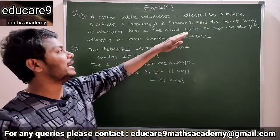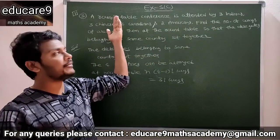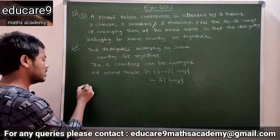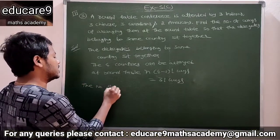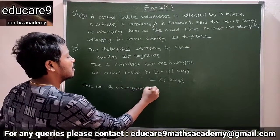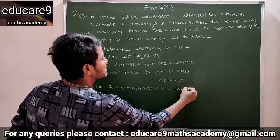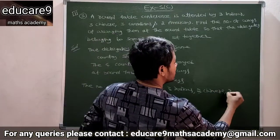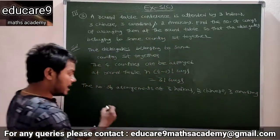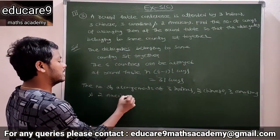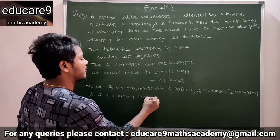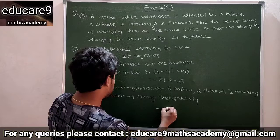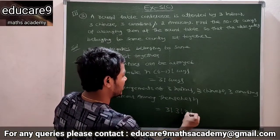Because we take three Indians as one unit, three Chinese as one unit, three Canadians as one unit, and two Americans as one unit — four units total. Again we have to arrange three Indians among themselves: three factorial; three Chinese among themselves: three factorial; three Canadians among themselves: three factorial; and two Americans among themselves: two factorial.